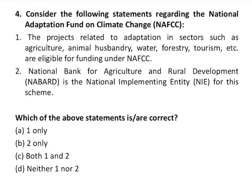Question number four is regarding the National Adaptation Fund on Climate Change (NAFCC). The first statement says projects related to adaptation in sectors such as agriculture, animal husbandry, water, forestry, and tourism are eligible for funding under NAFCC — correct. The second says NABARD is the national implementing entity for this scheme — also correct. Both statements one and two are correct, so C is the correct answer.